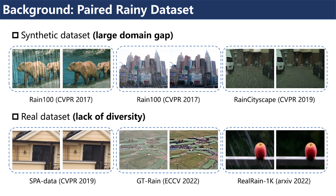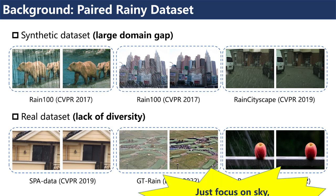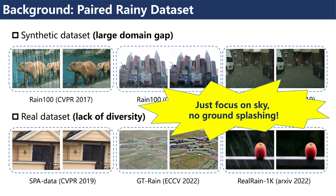For real images, existing paired real rain datasets such as SPA data, GT-Rain, and RealRain 1000s lack diversity. Moreover, they focus only on rain degradation in the sky, instead of ground splashing rain.